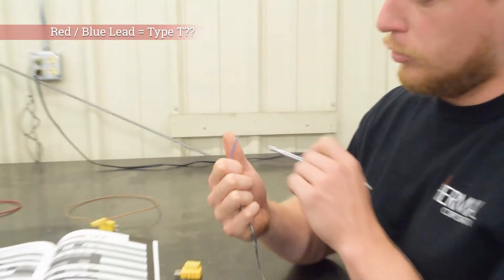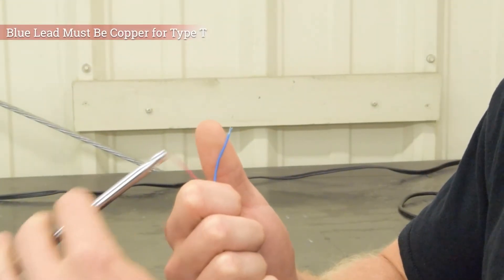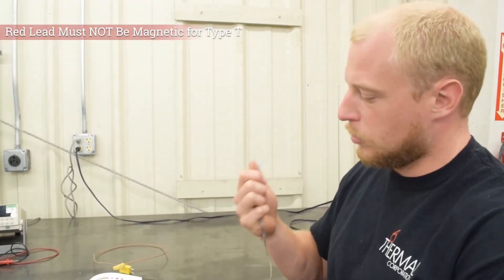However the blue lead is not copper and also the red lead is magnetic. So that really rules it out as a type T. So what's going on here?